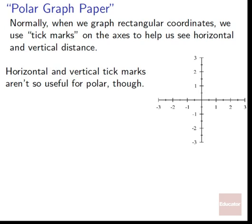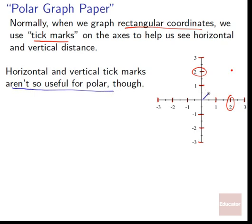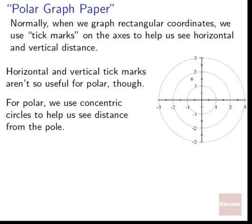Polar graph paper. Normally when we graph rectangular coordinates, we think in terms of tick marks on the axes — 1, 2, 3, negative 1, negative 2, etc. — to help us see horizontal and vertical distance. But horizontal and vertical tick marks aren't useful for polar. We can't figure out how far we are from the pole using those. So for polar, we use concentric circles to help us see distance from the pole.